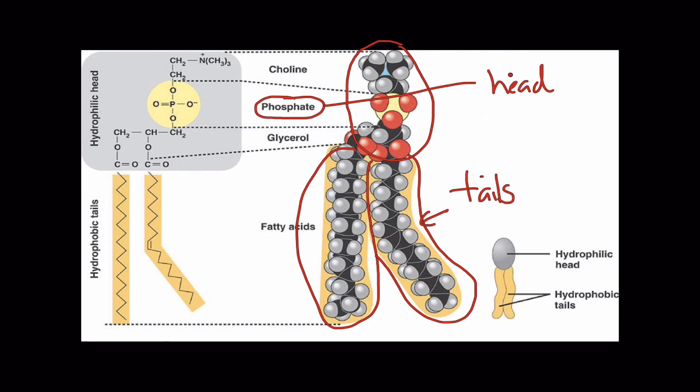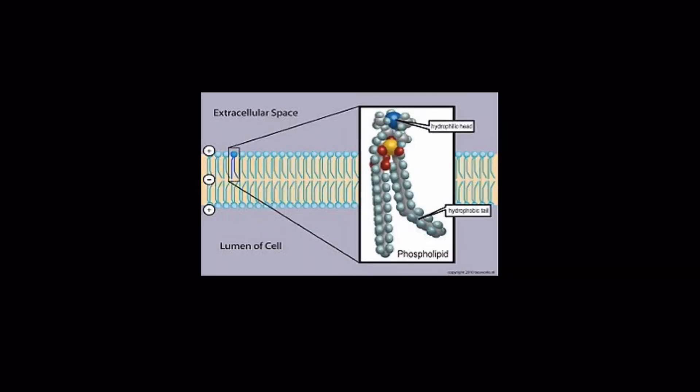Now what's cool about this molecule is the head is hydrophilic, which means it will dissolve in water or at least try to dissolve in water. The tails, on the other hand, are hydrophobic. They can't dissolve in water. They actually repel water, will not form hydrogen bonds. So this causes a really interesting thing to happen in cell membranes.